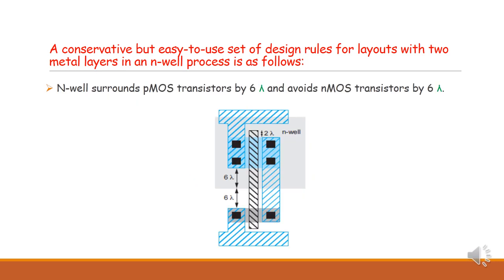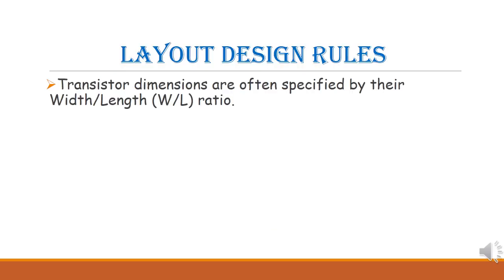The N-well envelope surrounds the PMOS transistor. At the top there is the PMOS transistor and at the bottom the NMOS transistor. The envelope surrounds the PMOS transistor by 6 lambda and avoids the NMOS transistor by 6 lambda, giving a total distance of 12 lambda. Transistor dimensions are normally specified by their width-to-length ratio, that is the W/L ratio.